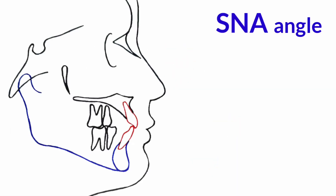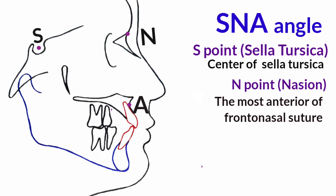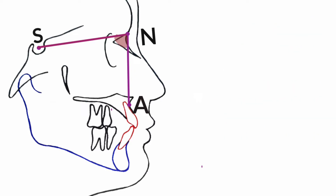The SNA angle is an angle formed by S-point, N-point, and A-point. S-point is the center of sella turcica. N-point is the most anterior point of the frontal-nasal suture in the mid-sagittal plane. A-point, or subspinale, is the deepest point on the contour of the premaxilla. The SNA angle is the angle of intersection between the SN line and NA line.